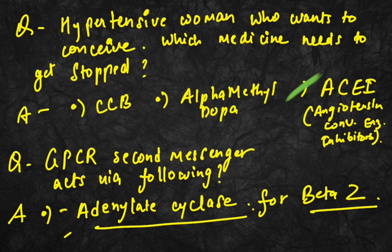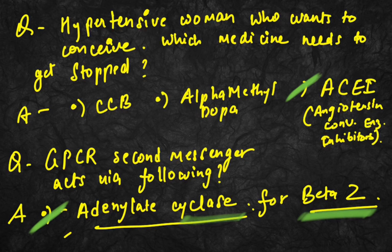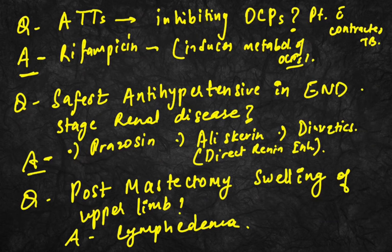GPCR secondary messenger acts via which pathway? It acts via adenylate cyclase for beta-2 receptors, and this was the correct answer in the options. Next, which anti-tubercular drug inhibits OCPs? The patient presented with contracted TB.